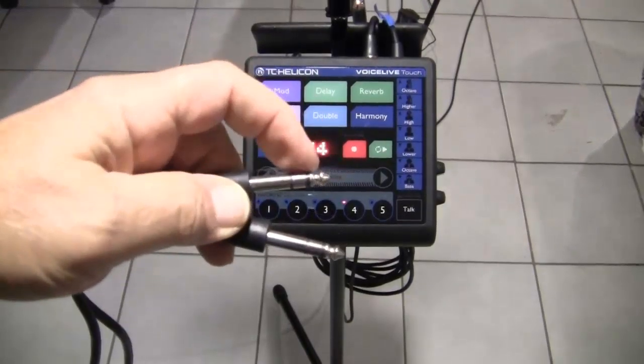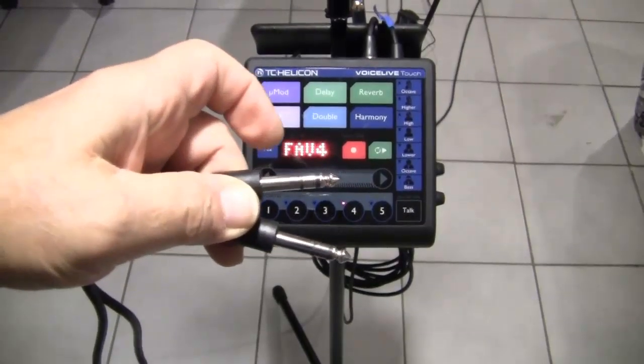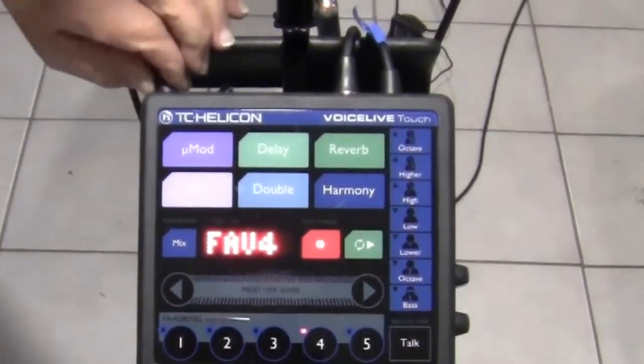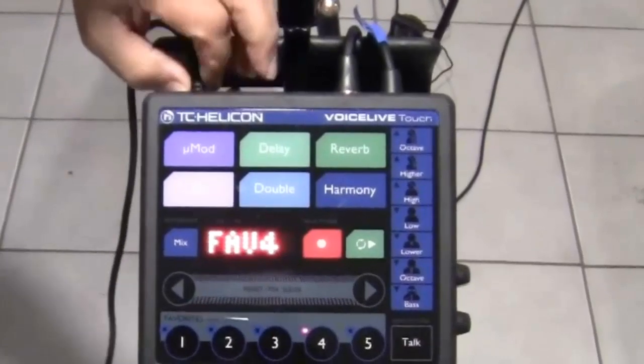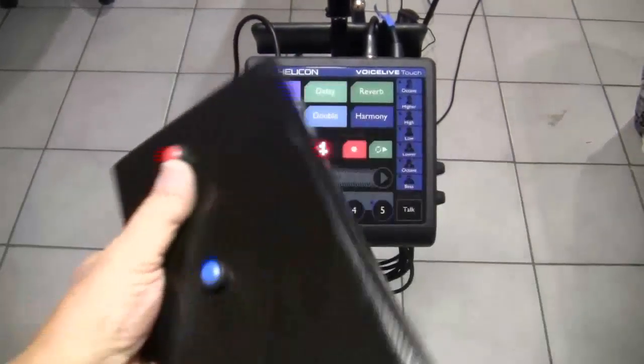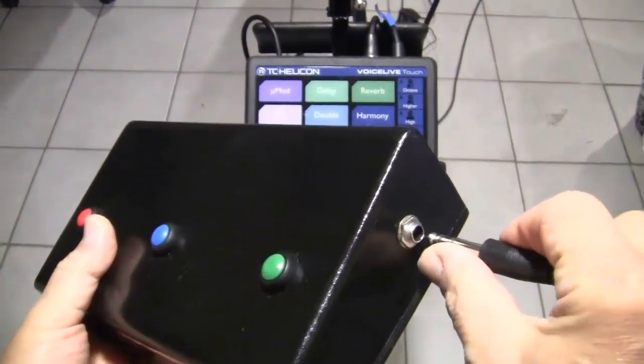sometimes called a TRS cable, because it has a tip, a ring, and a sleeve. First thing I'm going to do is connect one end of the TRS cable to the foot switch jack in the back of the Voice Live Touch and the other end to the Homebrew Switch 3.